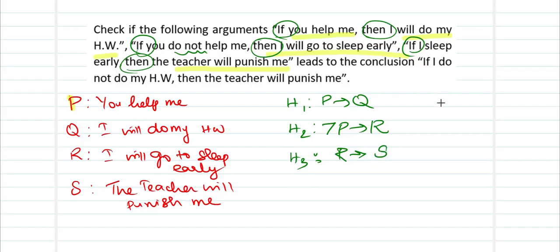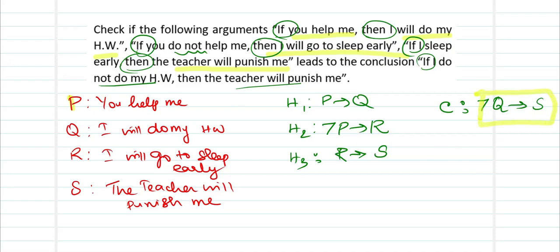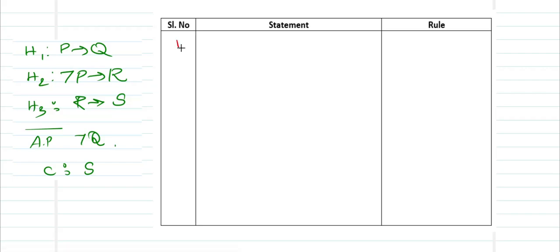The conclusion is: if ¬Q then S (if I do not do my homework, then the teacher will punish me). Notice that the conclusion is a conditional statement, so it best works using rule CP. Rule CP says to take the if-part ¬Q as an additional premise and arrive at the then-part S. Step 1: introduce the additional premise ¬Q — rule P (additional premise).